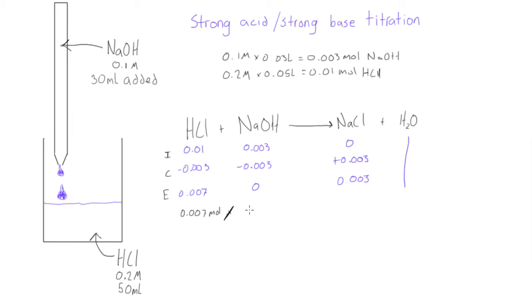Now we have 0.08 liters, right? We have 30 milliliters plus 50 milliliters. That's 80 milliliters. 0.08 liters. And when we divide that, we are going to get, that's 0.0875 moles per liter. Okay, cool.